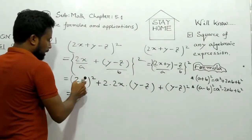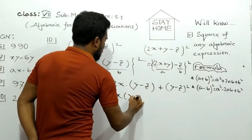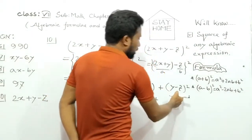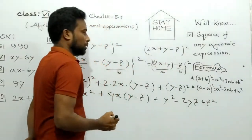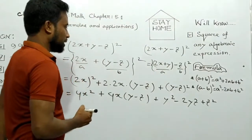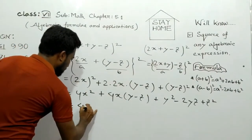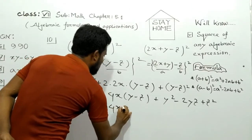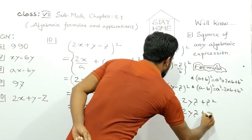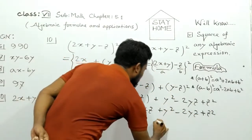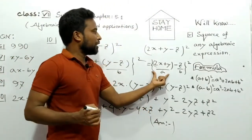Now we expand further: (y - z)² = y² - 2yz + z² by the (a - b)² formula. So the full expansion gives us: 4x² + 4xy - 4xz + y² - 2yz + z². This is our answer. You can also apply the (a - b)² formula and will find the same answer.